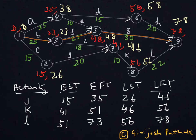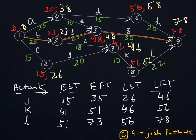When we look at free float, it is somewhat restricted in the sense that the earliest start time of the subsequent activity should not be disturbed. Look at activity K — K starts at node 7 whose earliest time is 41. It means that for free float, J cannot continue beyond 41, because the earliest start time of K should not be disturbed. So activity J can be started earliest at time 15 and can go at the most up to 41, meaning 41 minus 15 gives 26 days available total. Beyond 41 it cannot go, even though the latest time for node 7 is 46.